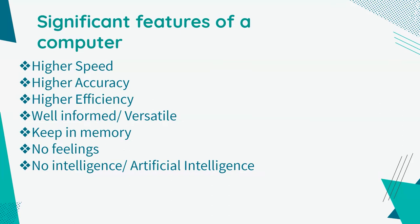Moving on to the next feature, I'm going to talk about higher efficiency. Efficiency is the ratio of useful work to resources expended. In other words, the ratio of the output to the input of a given system. So basically, the ability to produce something with the minimum amount of effort.